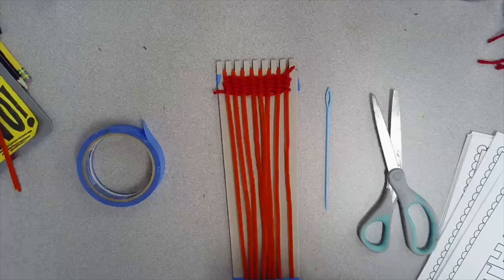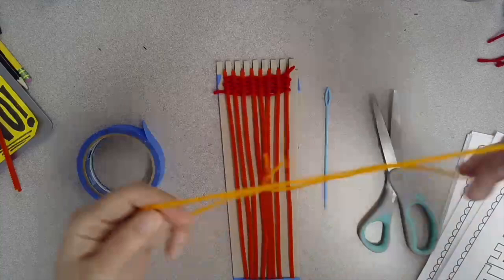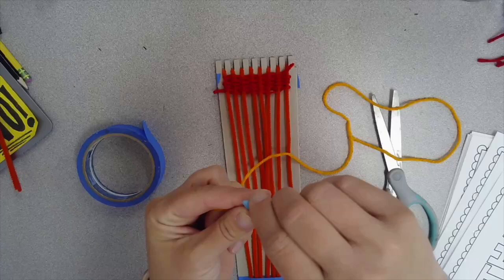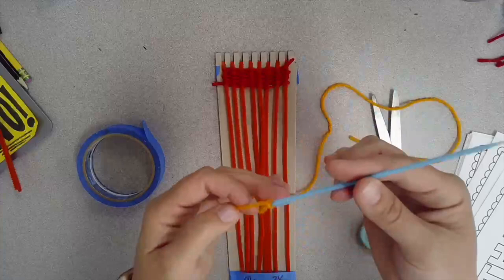And then take your next color and add it to your needle. Like I said, I'm doing the rainbow order, so I picked orange next. Pinch the end of the string or yarn to be able to push it into the needle. Do the same thing we did before. Loop it, put the tail through, tie it tight. Loop it, put the tail through, tie it tight.